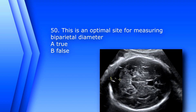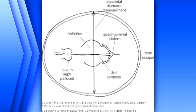Question 50: This is an optimal site for measuring the biparietal diameter — true or false? The answer is B, false. There is cerebellum and posterior fossa visible here. For the biparietal diameter you should be perfectly transverse in the middle of the cranium, with the thalamus, cavum septum pellucidum, and interhemispheric fissure in your image.